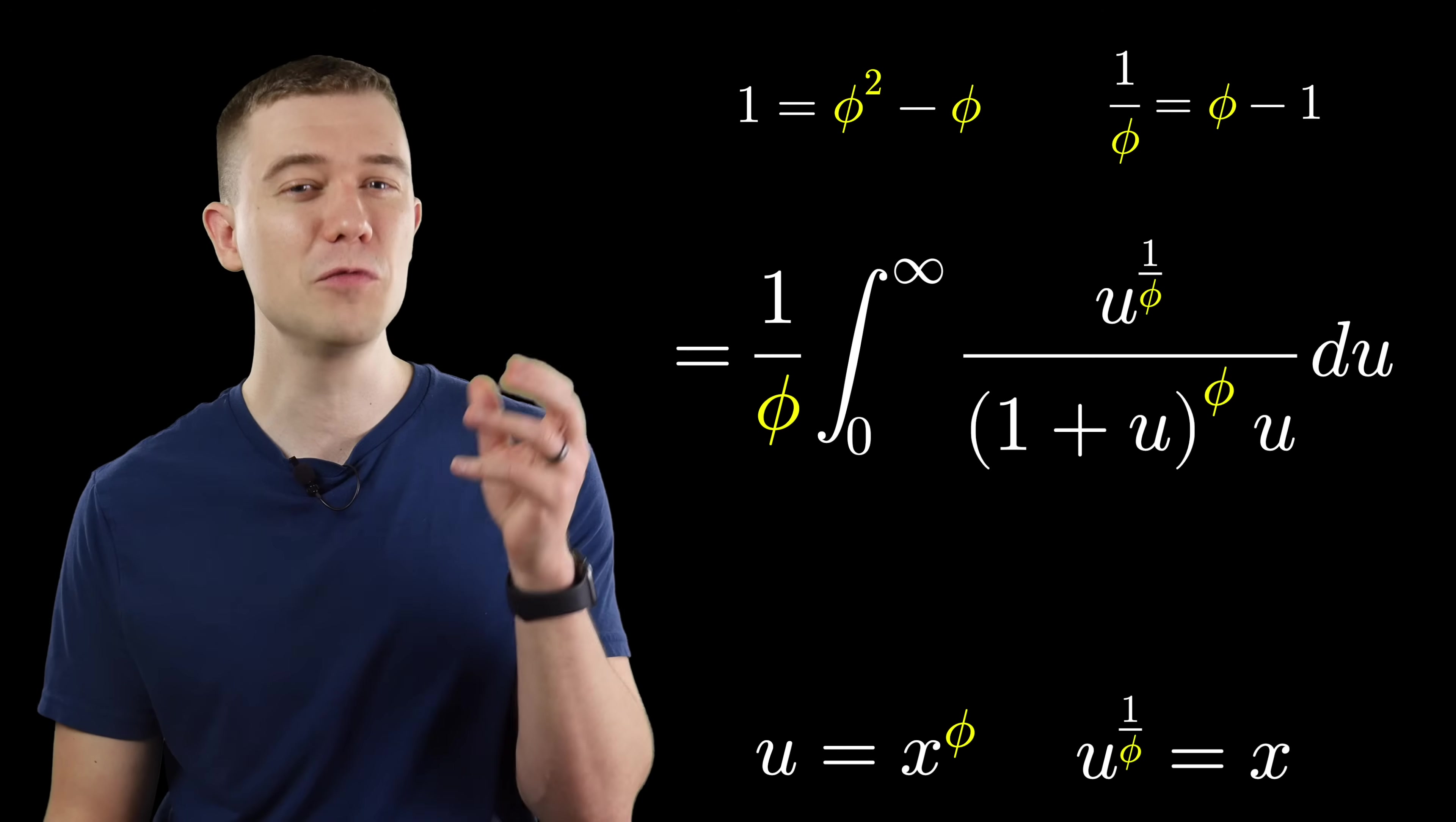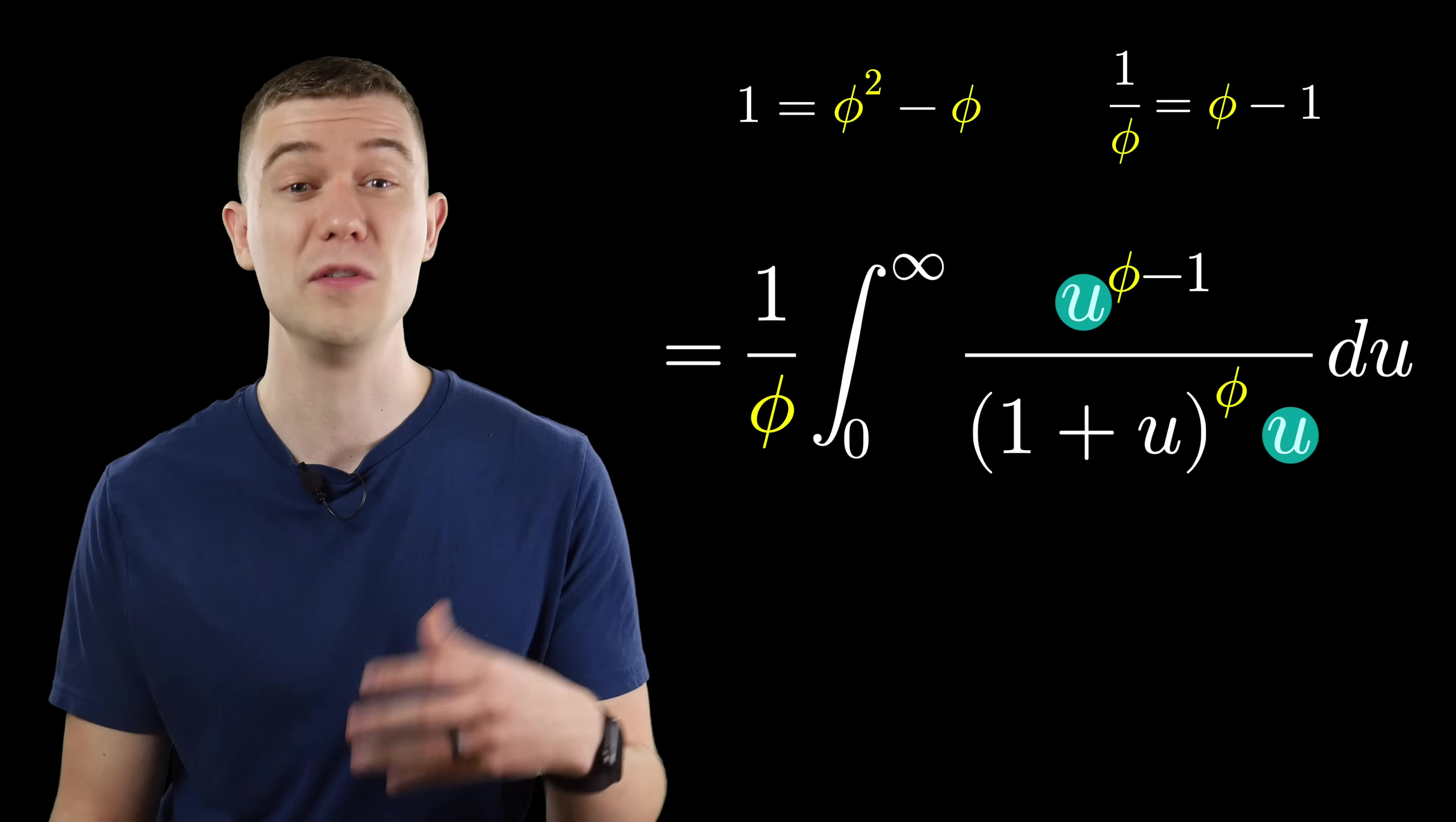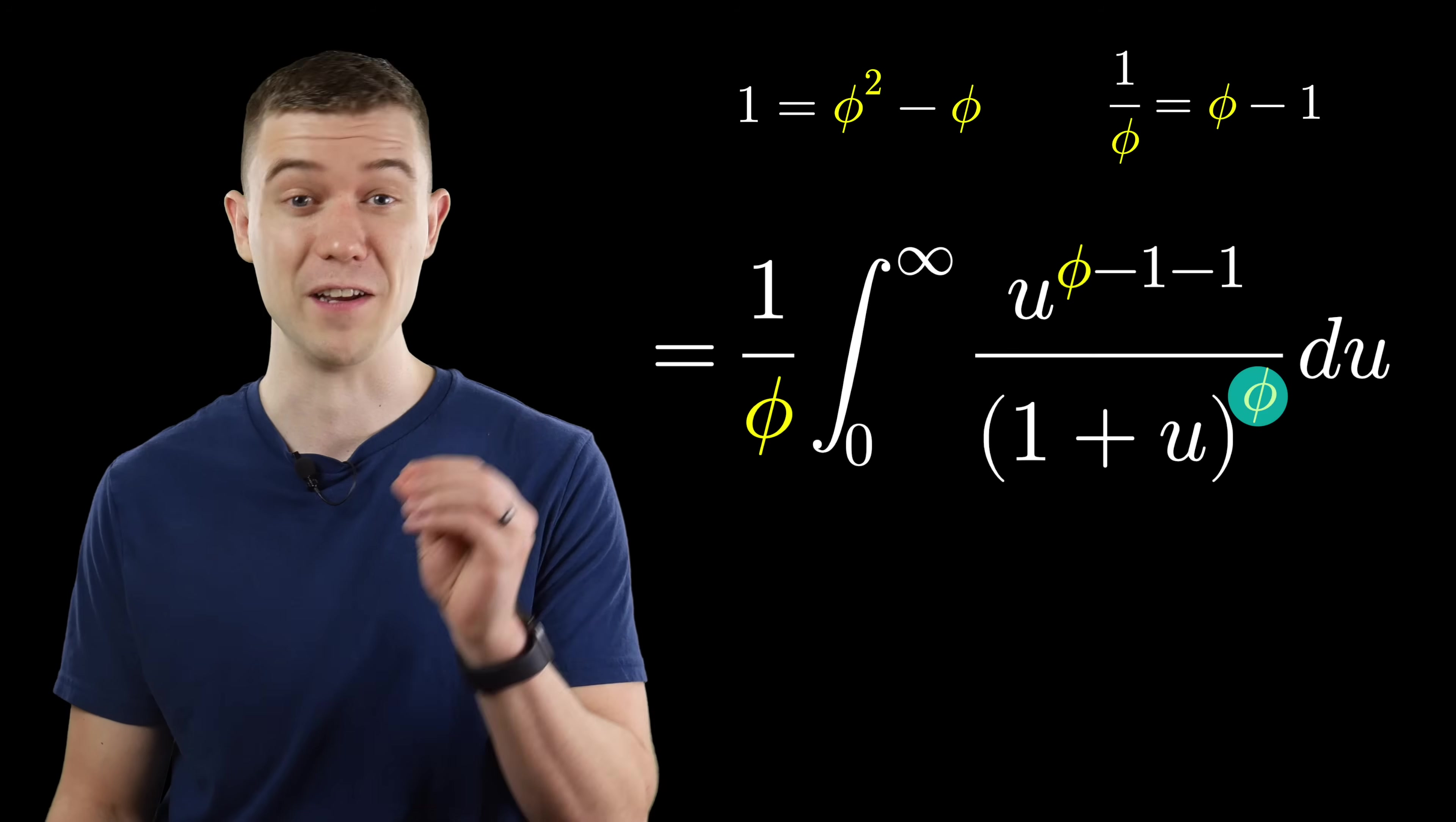What we have now should remind you about those facts of the golden ratio. Namely, 1 over phi equals phi minus 1. Let's replace that. And combine these u's once again, using properties of exponents. Now, I've left these exponents this way for a very specific reason. And using just a little bit of trickery, I'll rewrite the exponent in the denominator as well.